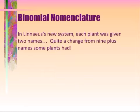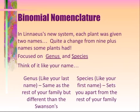Binomial nomenclature: in Linnaeus' new system, each plant was given two names — quite the change from the nine-plus names used to identify plants before. The two components used to classify plants in binomial nomenclature are the genus and the species. Plants are named in that order, using the genus first and the species second. Think of it like your own name: the genus is kind of like your last name — it's the same as the rest of your family but makes you different from, say, the Swansons. And the species is like your first name; it sets you apart from the rest of your family. It's kind of like writing your last name first and your first name last.